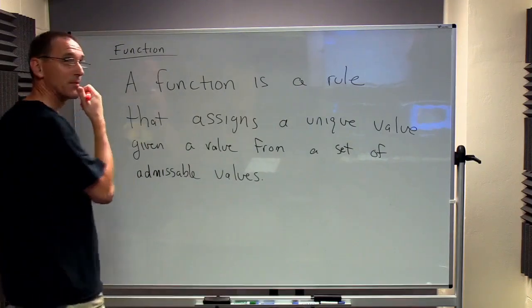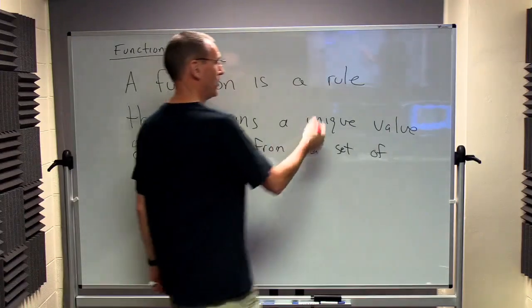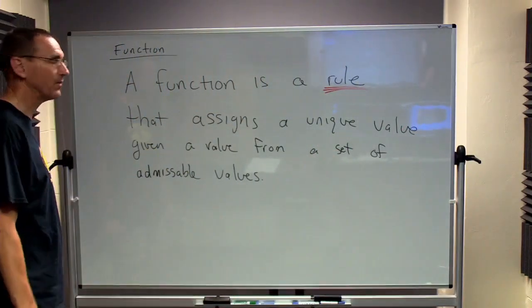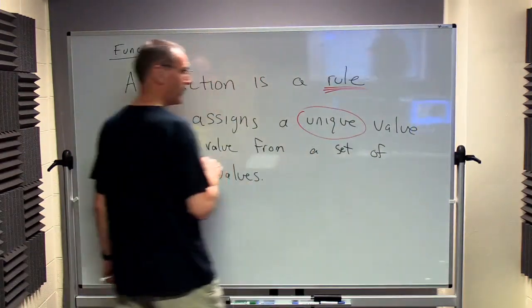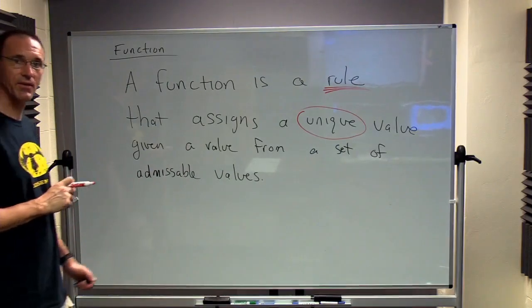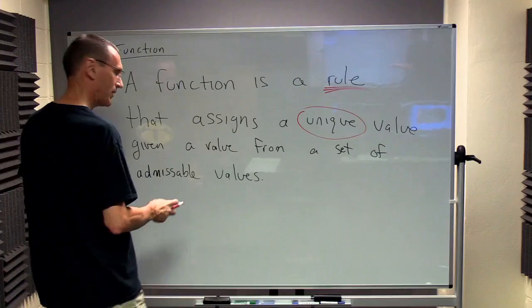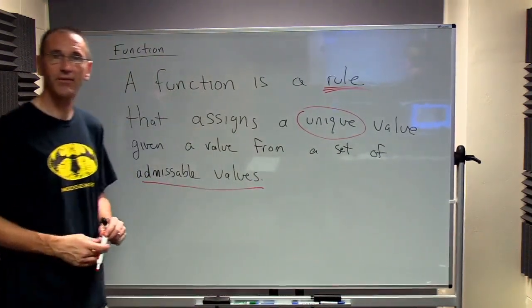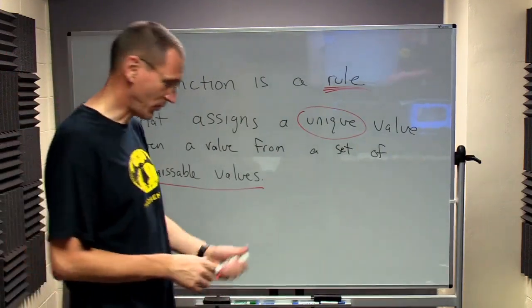But let's see if we can pick apart the important things here. It's a rule, so this is some kind of method or way to make a calculation. And we've got to get something unique out of this for everything that we put into it. And something that's a little subtle is this idea of a set of admissible values. All right, let's explore this.